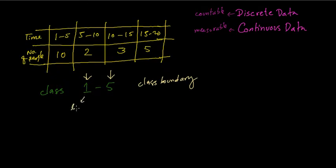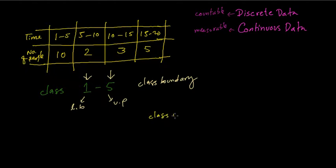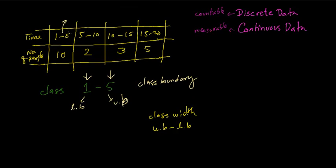We have the lower boundary and the upper class boundary. When you want to find how wide the class is, that is called the class width. The class width is upper boundary minus lower boundary. So the class width for the first class is 5 minus 1, which equals 4.